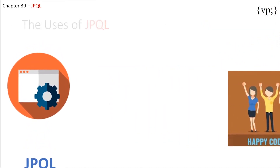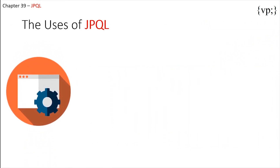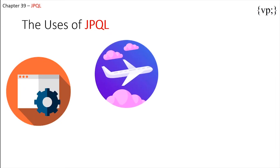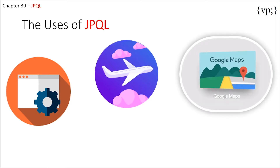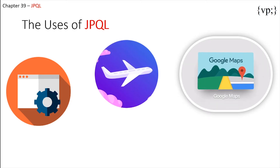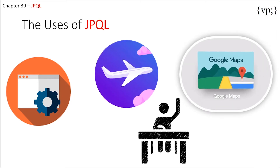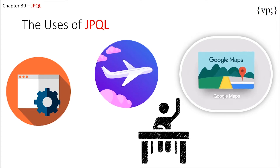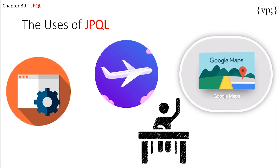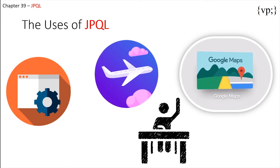Now there are a few uses of JPQL. They can be used for, for example, finding the best plane ticket price based on the criteria of the user, finding the closest Tim Hortons to you, or checking if a person is present in your class or not. JPQL can be used in many many instances.